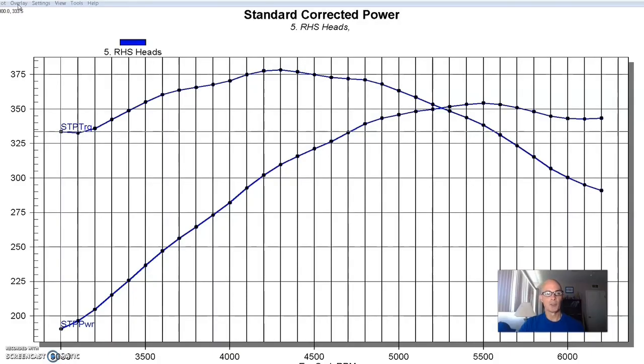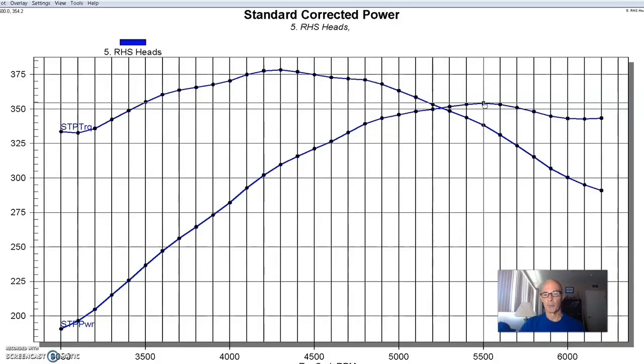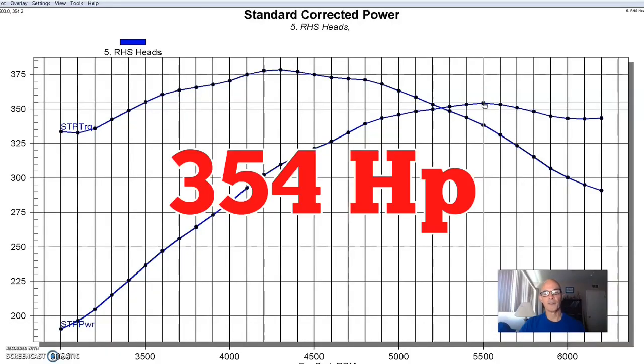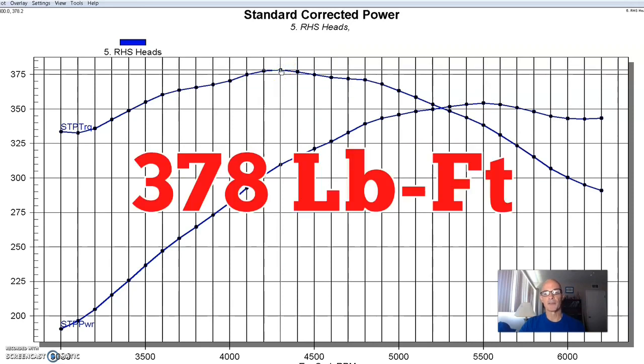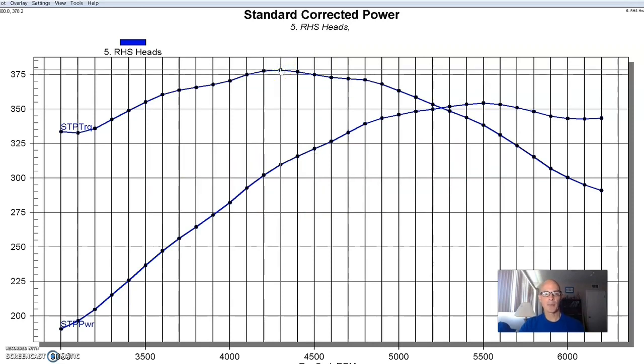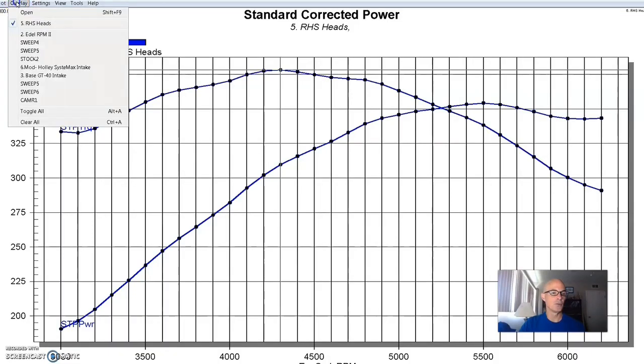But what I want to show you is what happens when we upgrade the intake manifold from a good intake, which the GT40 is, to an even better intake, but on a combination that really needs more intake. We didn't see too much of a gain from the GT40 on the stock motor. But here's our combination with the RHS heads, the 274 cam, and the GT40 intake. The power output was up to 354 horsepower, and peak torque was up to 378 foot-pounds.